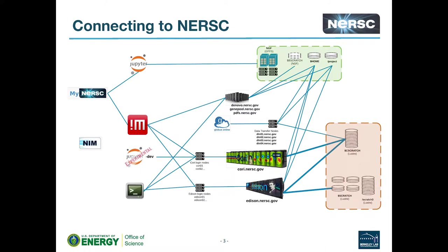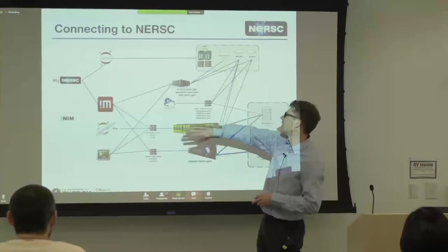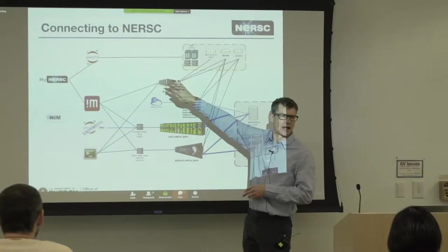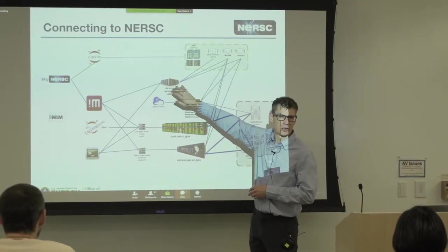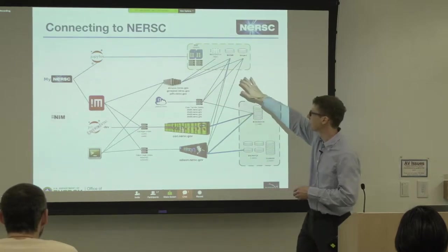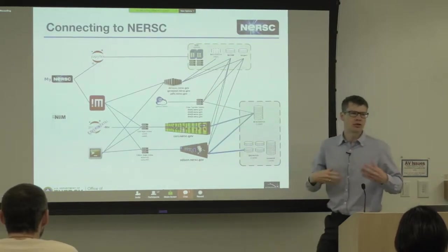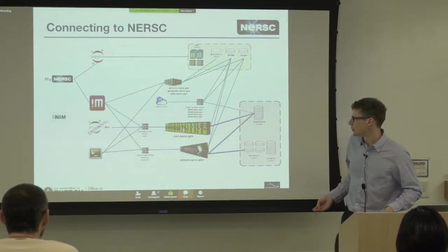This is a rather busy cartoon with lots of logos on it. Essentially what we're seeing here is that there are multiple entry points into NERSC systems. Down here we've got the primary NERSC systems, Cori and Edison. There's a couple of others that some people may be using: DeNovo and GenePool and PDSF.